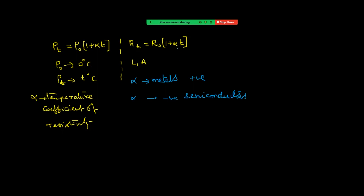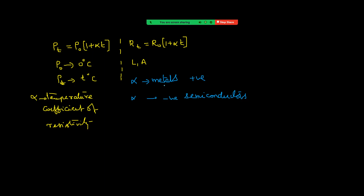Alpha positive means resistance increases with temperature; alpha negative means resistance decreases with temperature. In the case of metals, electrons making collisions with positive ions is the cause of resistance. When we increase temperature, the positive ions vibrate with more amplitude, so electrons make more collisions — that is why alpha is positive for metals.